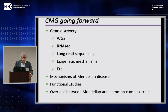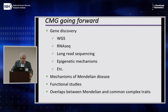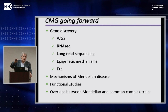Going forward, the CMGs will continue work on gene discovery, with lots of new sequencing technologies being tested to improve solution rates. In addition to gene discovery, we're learning a lot about mechanisms of Mendelian disease — it's not the simple system Gregor Mendel described in 1865, though he did a pretty good job. We need a lot more functional studies, and this is one of the things the mouse project makes possible. We're also increasingly interested in overlaps between the distribution of Mendelian phenotypes and Mendelian variants versus those causing common complex traits — there's a lot to learn at that interface.